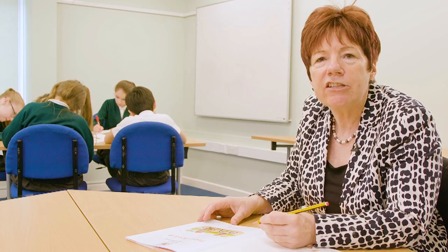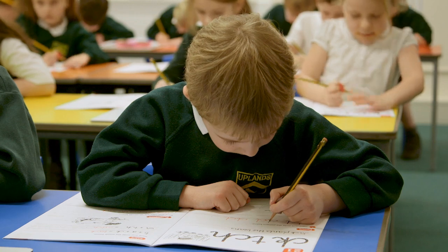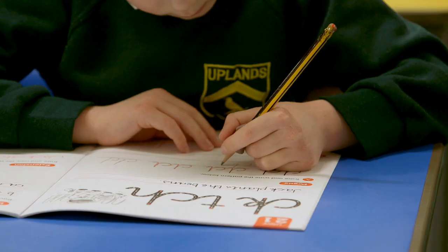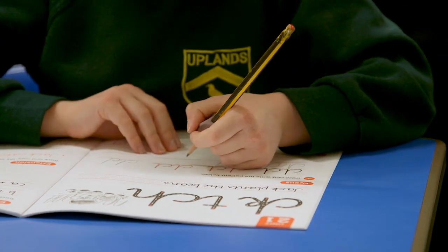Forcing a child to change their grip isn't easy and can quickly undermine their confidence. Instead, encourage them to angle their paper about 8 degrees to the left. They should use their right hand to steady the paper above the writing line.